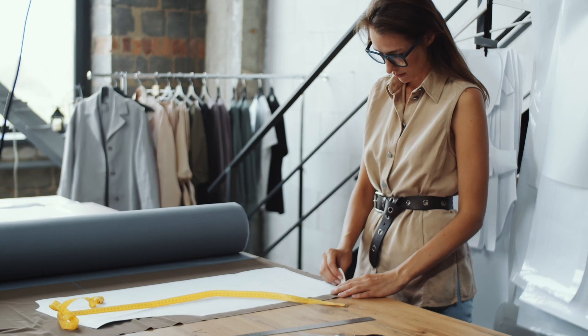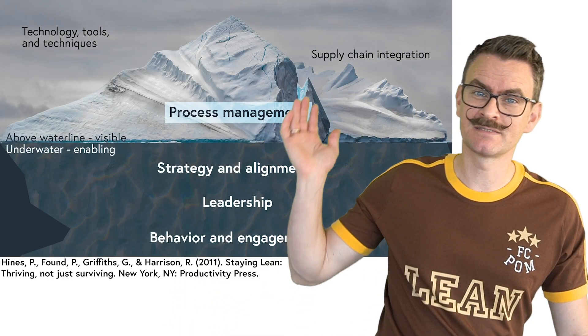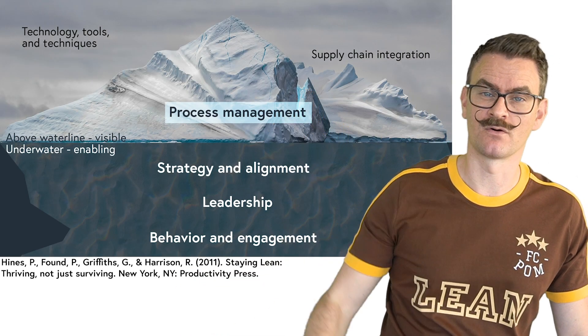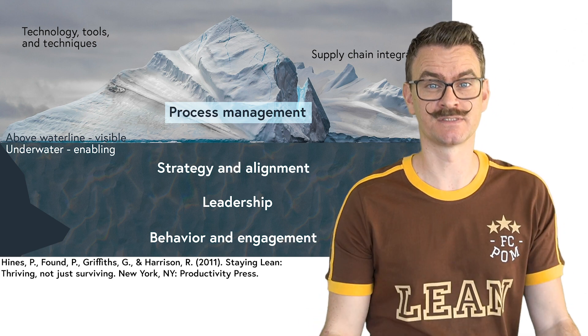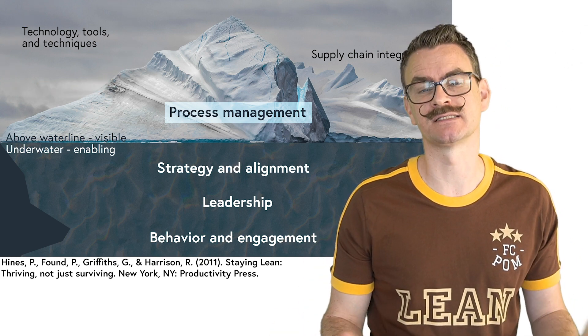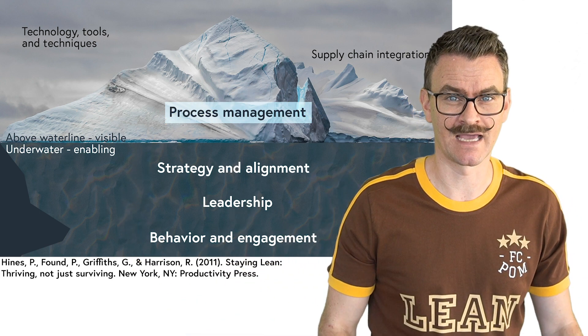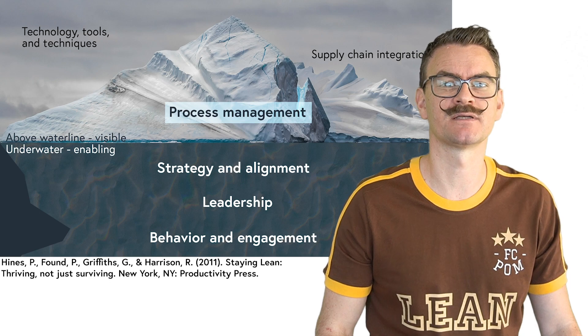Remember that the standard represents the best known way of conducting a task. So, that's the five lean principles and a range of tools and methods that constitute lean production from a technical perspective. Let me end by introducing the lean iceberg model by Professor Peter Heinz and co-authors. As you see, we have only discussed one of the most common and visible elements of lean. The much bigger part is invisible and soft, and is needed to enable a lean transformation.